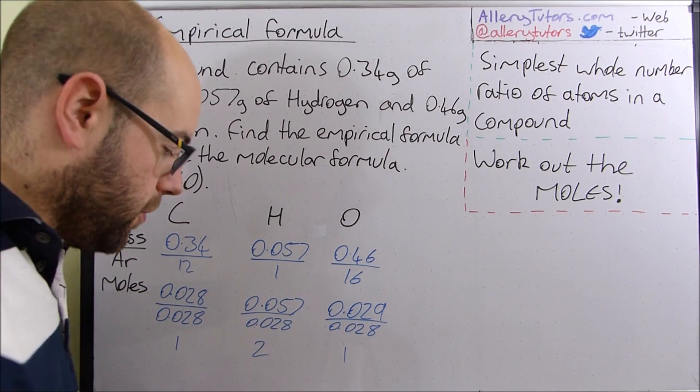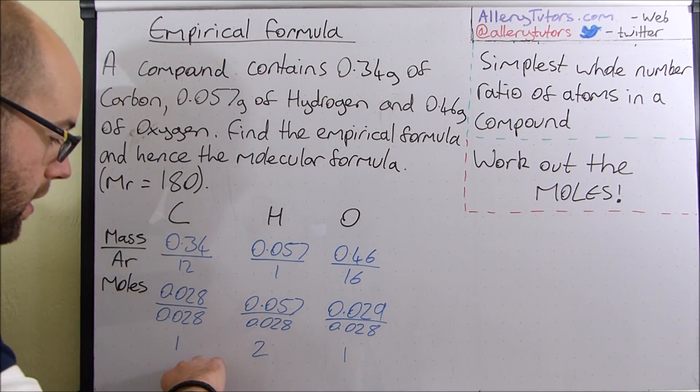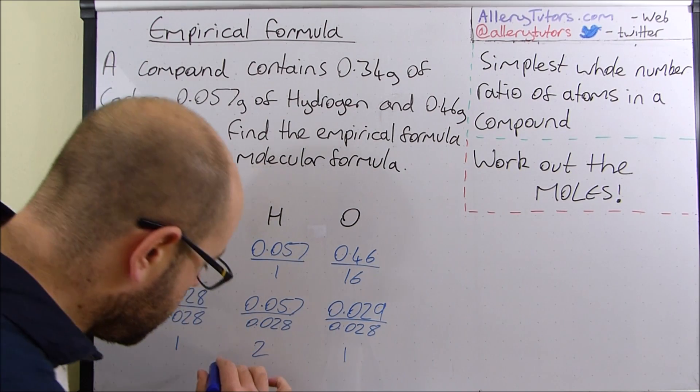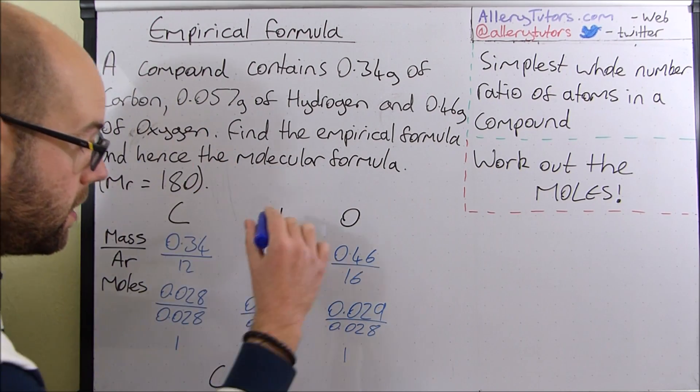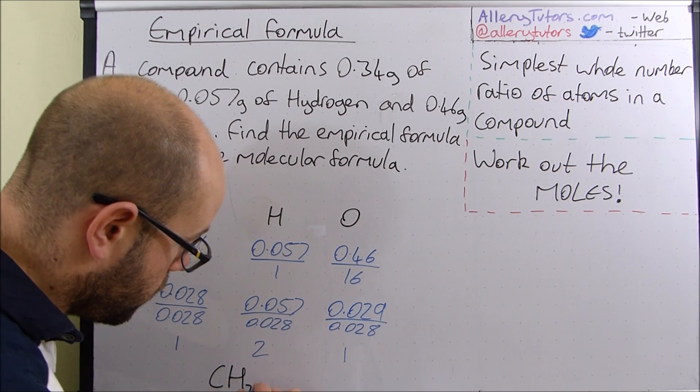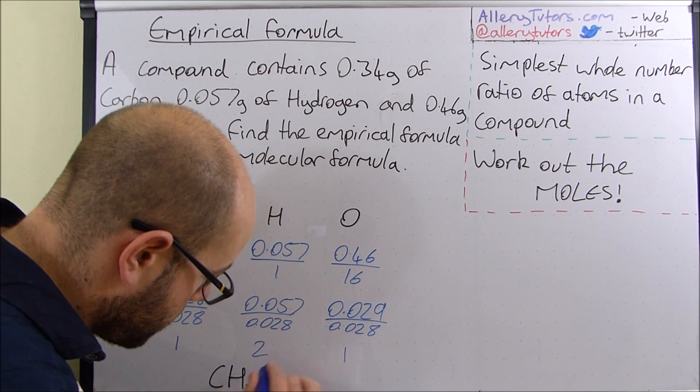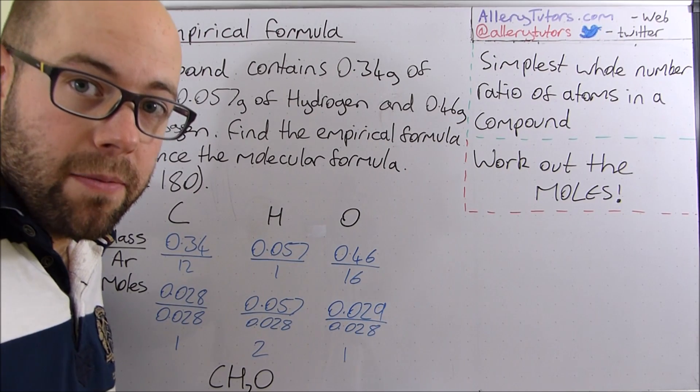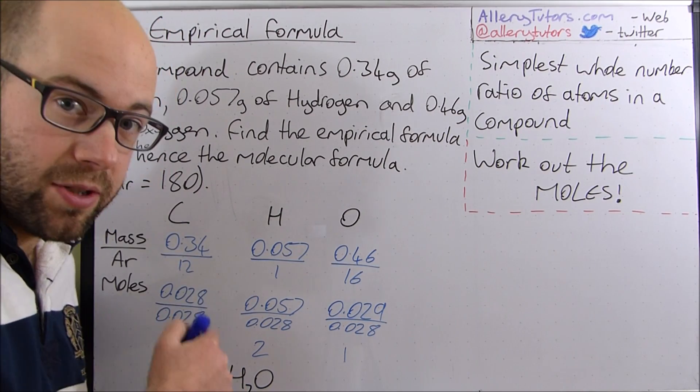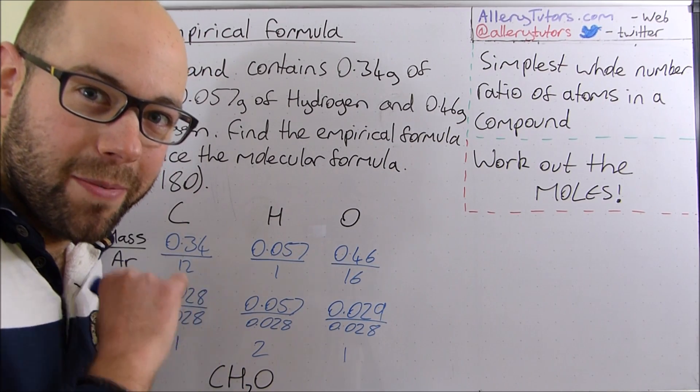This is now our empirical formula. So our empirical formula would be C because we've got 1 carbon, H2 because we've got two hydrogens and then O. There is our empirical formula and you must write that because you don't get a mark if you don't write your empirical formula.